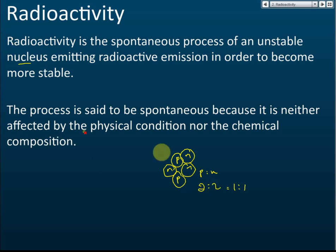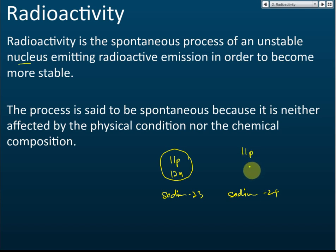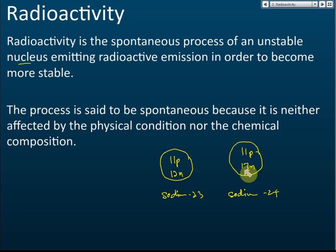For example, sodium-23 has 11 protons and 12 neutrons and is very stable. But sodium-24 has 11 protons and 13 neutrons, making it unstable because it has too many neutrons. This is why some nuclei are stable and others are not.